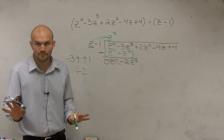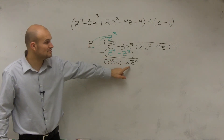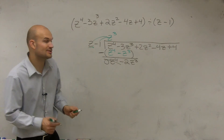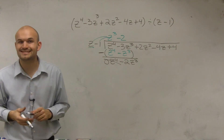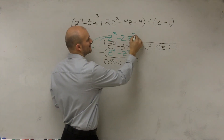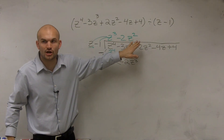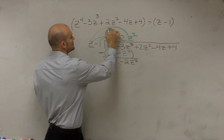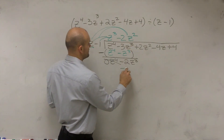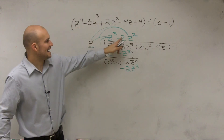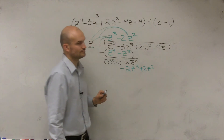So now let's move to the next row. z divides into negative 2z cubed how many times? It's going to divide in there negative 2z squared times — because negative 2z cubed divided by z gives you negative 2z squared. Now we need to multiply this term times every single one of the divisor terms. So negative 2z squared times z gives you negative 2z cubed, and negative 2z squared times negative one gives you positive 2z squared.